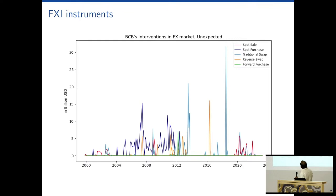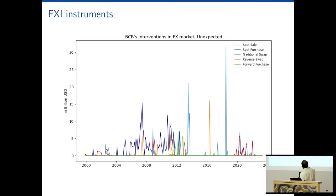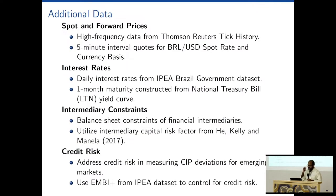The time series of unexpected interventions shows a lot of spot purchase interventions in the 2000s, with spot sales starting to occur more toward 2019 onwards. Traditional swaps appear in the 2010s as well. For intraday data on spot and forward rates, we use Thomson Reuters five-minute interval quotes for the real/USD rate. For interest rates we have daily data, and we are working on expanding to high-frequency interest rates.